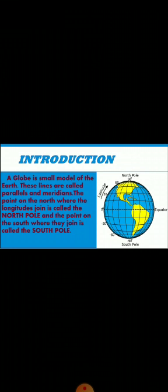Globe is a small model of the earth. As you can see in the picture, these are latitude and longitude lines — horizontal and vertical in shape. These lines are called parallels and meridians. The point on the north where the longitudes join is called the north pole, and the point on the south where they join is called the south pole.